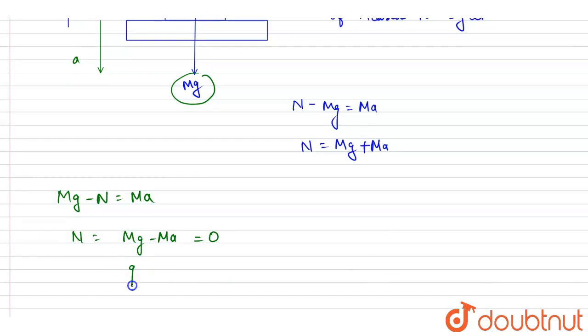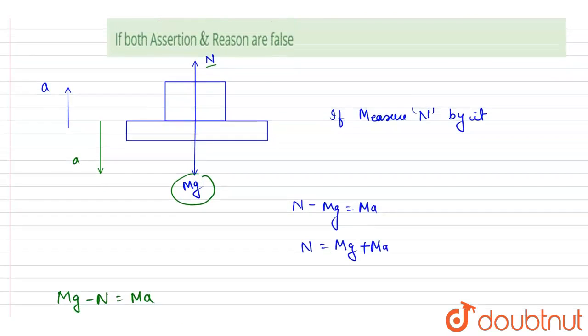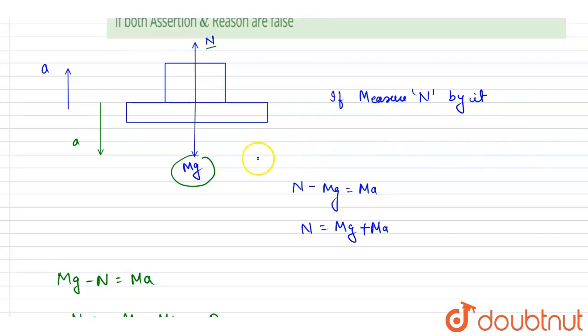And if I say weightlessness, that is normal reaction zero, it will be when the acceleration is in downward direction with magnitude equal to g. So it can happen.